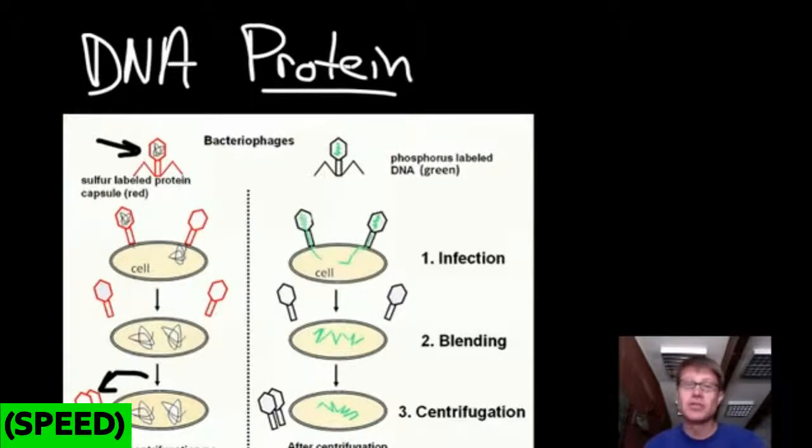And so what Hershey Chase did, it's a really elegant experiment, is they used two different atoms. They used, in one experiment, sulfur. And in this case, the sulfur is labeled red. But they used a red dye to dye the bacteriophages in this experiment. They then infect the bacteria, blend it all up. They precipitate it out and see what color came out. Now why was it important to use sulfur? It's because sulfur is found in proteins, but it's not found in DNA.